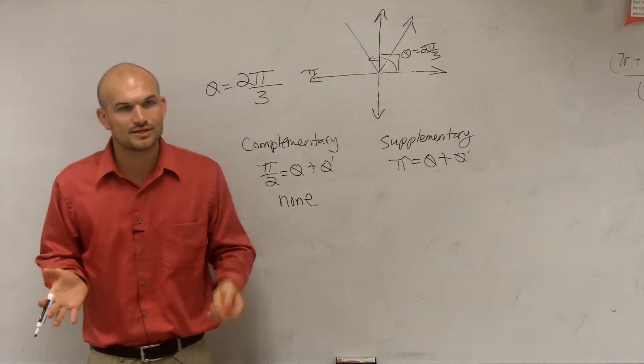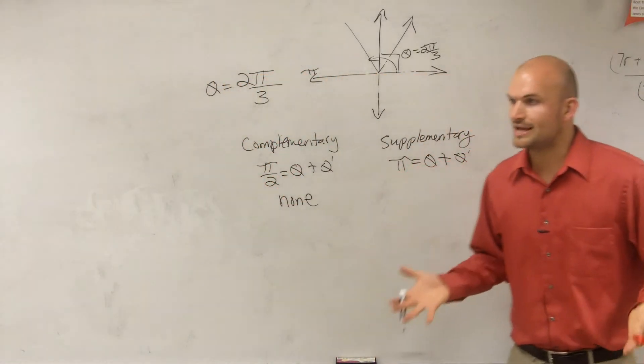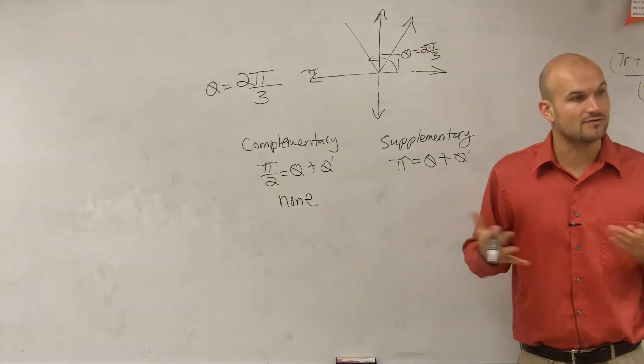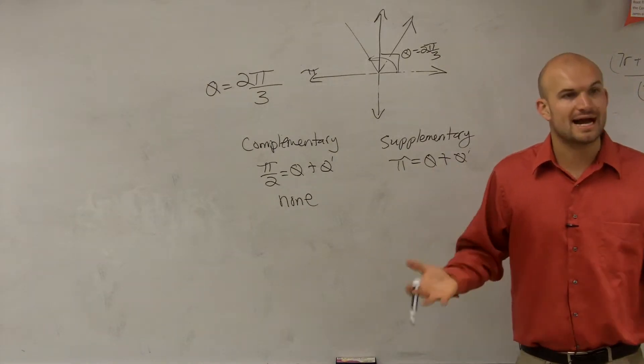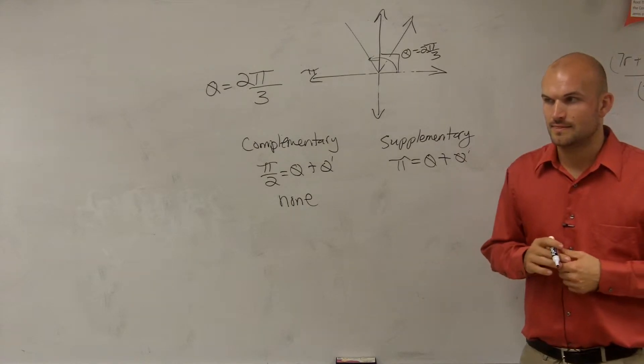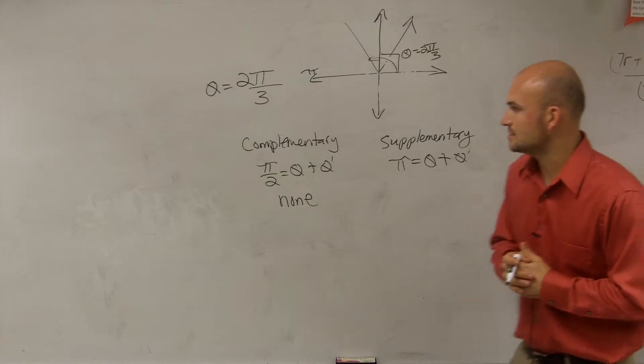We cannot be dealing with negative angles when we're adding for complementary angles. It says what two angles add up to give you π over 2. Well, if one angle's already larger than π over 2, you're not going to have complementary angles, because you can't have negative values in your angles.